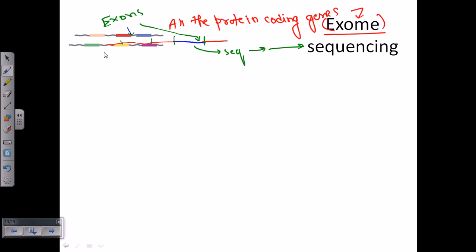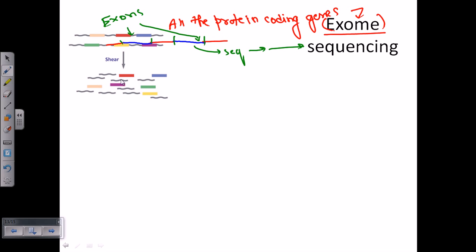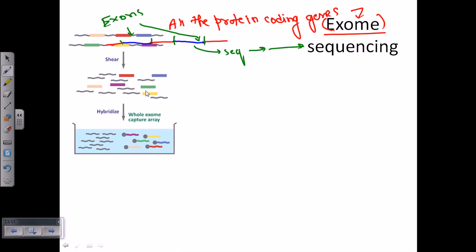Let us begin with the process of exome sequencing. We start with the whole DNA, the whole genome. Then we break it down by shearing and produce all the breakdown products. These fragments contain exomes as well as introns. From those fragments, we need to amplify the exomes.